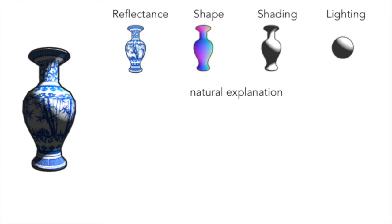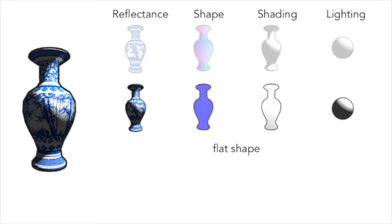For example, given this vase, humans are able to effortlessly infer that there is a light coming from the top right, the vase has a curved shape, and it has a uniform blue color. However, that's not the only possible explanation. If you instead predict a flat shape, there will be almost no contribution from shading, and so the dark regions in the observation appear in the reflectance.